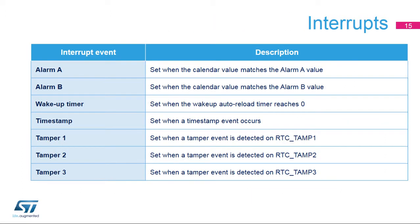Several RTC events can generate an interrupt. All interrupts can wake the microprocessor up from all low-power modes. The alarm A interrupt is set when the calendar value matches the alarm A value. Similarly, the alarm B interrupt is set when the calendar value matches the alarm B value. The wake-up timer interrupt is set when the wake-up auto-reload timer reaches zero.